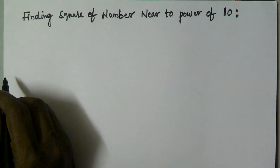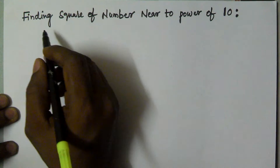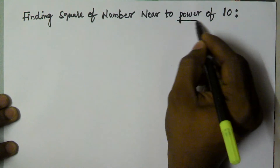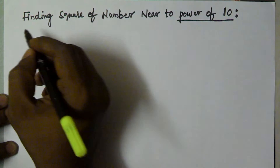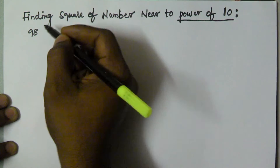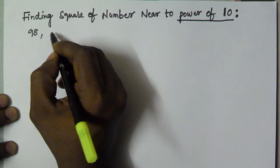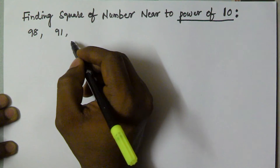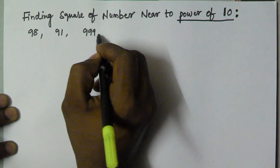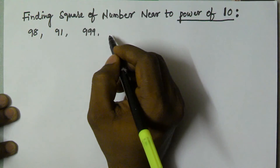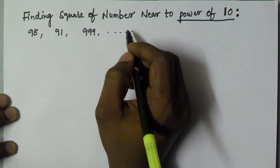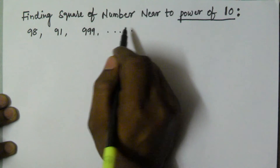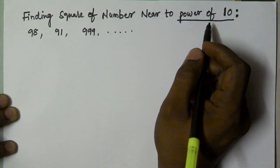Hello friend. In this video I'm going to show you how to find the square of a number which is near to a power of 10 — like 98, which is nearer to 10 to the power of 2; 91, which is also near to 10 to the power of 2; like 999, which is near to 10 to the power of 3, and so on.